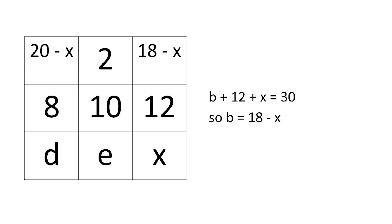We can look at the third vertical column containing B, 12, and X. So B plus 12 plus X equals 30, which gives us B equals 18 minus X.